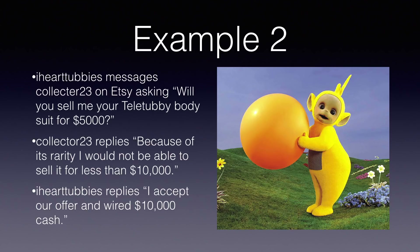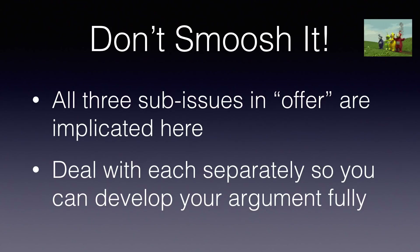Let me give you another example. iHeartTubbies messages Collector23 on Etsy and asks, 'Will you sell me your Teletubby bodysuit for $5,000?' Collector23 replies, 'Because of its rarity, I would not be able to sell that bodysuit for less than $10,000.' iHeartTubbies replies, 'I accept your offer and have wired $10,000 cash to your account.' Take a minute. Think about whether you would smush this issue or expand it. Ask yourself of the three sub-elements of offer, which are raised by the facts here and which are easy to dispense with quickly. My advice here: don't smush it. All three issues of offer are implicated here. You should deal with each separately so you can develop your argument fully.